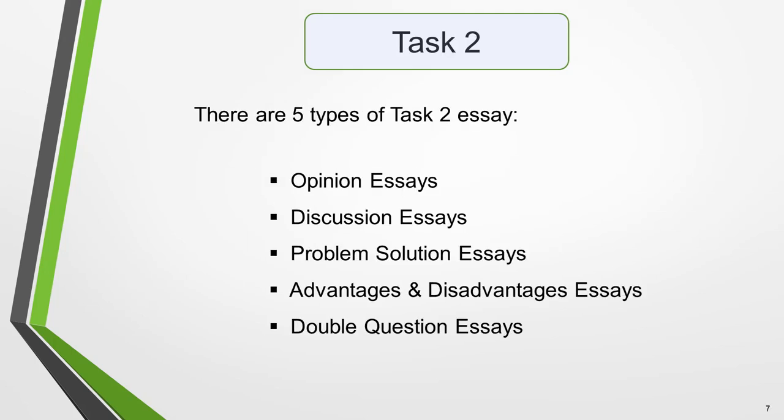For Task 2, you must write an essay on a topic of general interest. The essay will be a response to a specific point of view, problem or argument stated in the question. There are five types of Task 2 essay: opinion essays, discussion essays, problem-solution essays, advantages and disadvantages essays, and double-question essays. Your response to both tasks should be written in a formal style. Follow the links in the notes below the video to see lessons on each of these, including sample questions and model answers.